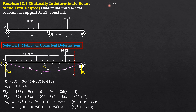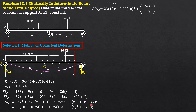Dividing by EI gives the slope at A. Knowing C₁, we can compute the deflection at B by setting x equals 10 into the equation — negative values in the parentheses will be ignored. So EI·delta_B equals 23 times 10³, minus 0.75 times 10⁴ (ignored — negative), plus C₁ (which is −962/3) times 10. Therefore delta_B equals −50,320 / (3EI).